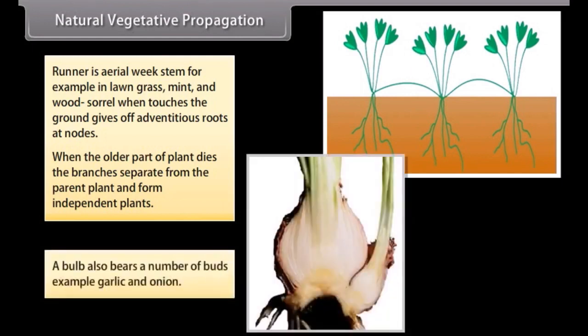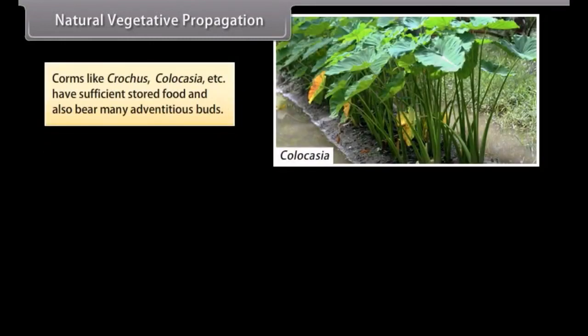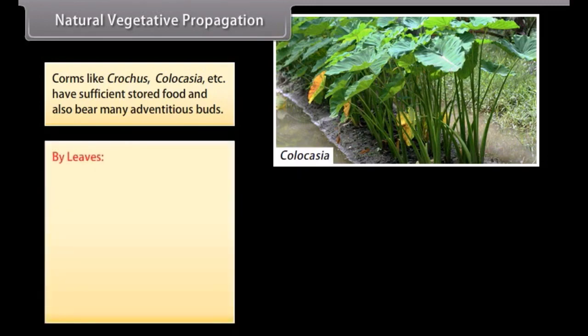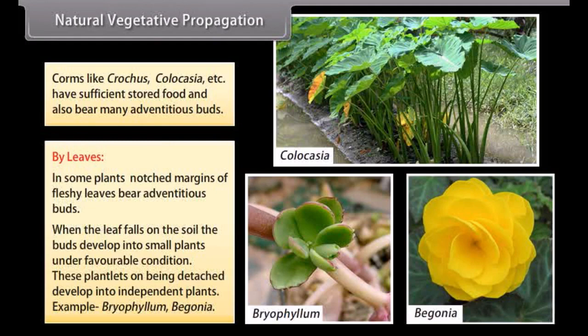A bulb also bears a number of buds, for example garlic and onion. Corms like crocus and Colocasia have sufficient stored food and also bear many adventitious buds. By leaves — in some plants, the notched margins of fleshy leaves bear adventitious buds. When the leaf falls on the soil, the buds develop into small plants under favorable conditions, and these plantlets on being detached develop into independent plants. Examples include Bryophyllum and Begonia.